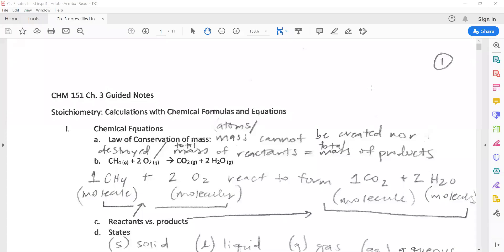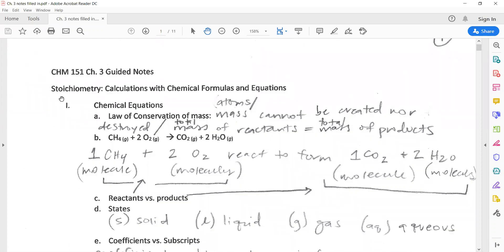Here's video one for chapter three. We'll be looking at chemical reactions, chemical equations, and calculations. So here what we talk about a lot is stoichiometry, which are calculations that have to do with chemical formulas and equations.